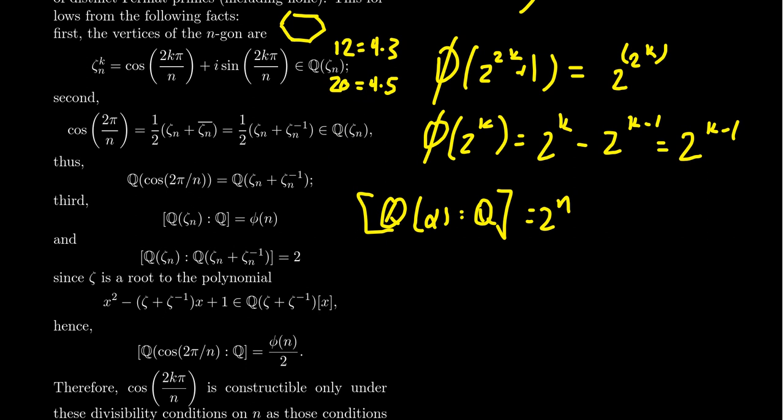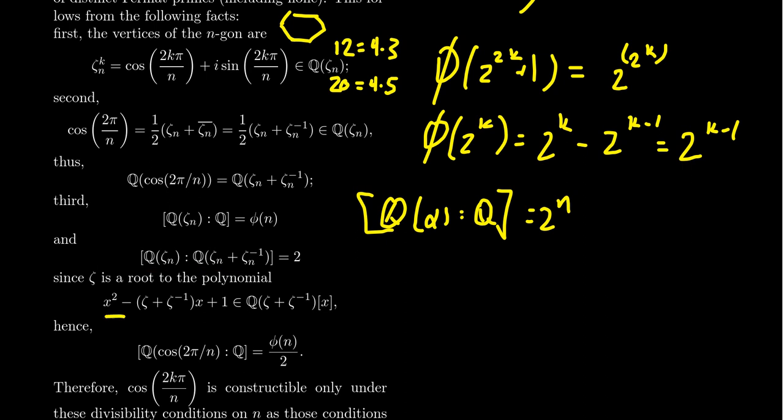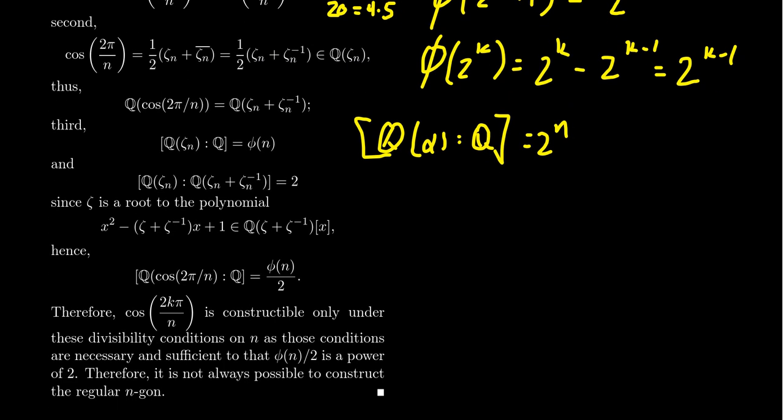That's why this degree does matter. Cosine of 2 pi over n, if you look at the degree of the extension Q adjoin a primitive nth root over Q adjoin cosine of 2 pi over n, this is a degree 2 extension because cosine of 2 pi over n is the root of this quadratic polynomial, x squared minus zeta plus zeta inverse x plus 1, which is a polynomial over this field.